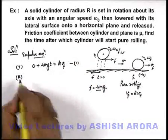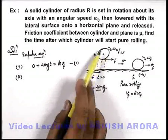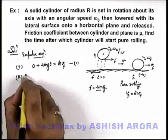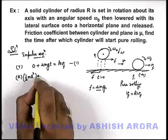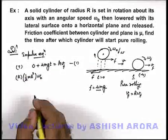For rotational motion if we just have a look, the initial angular momentum of the cylinder we can write as half m r square into omega not, which was the initial angular speed.